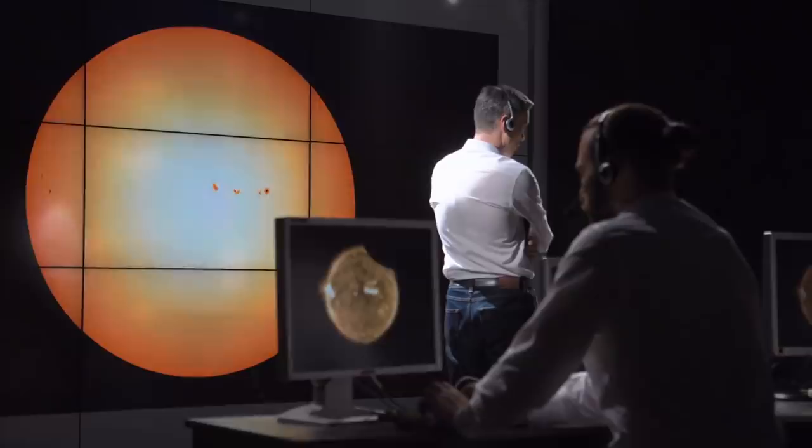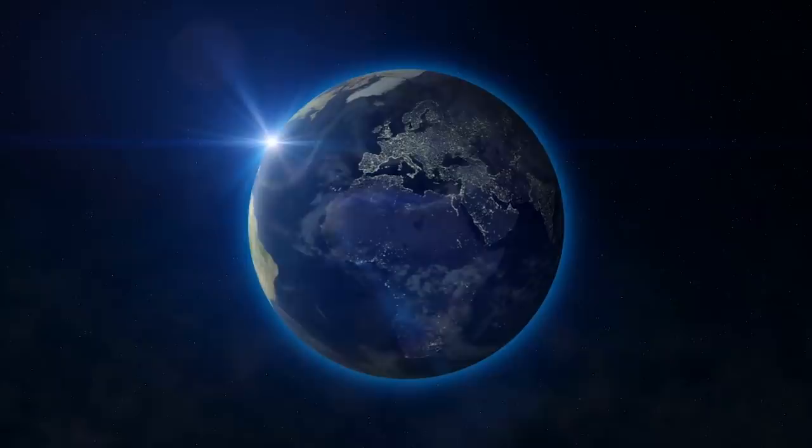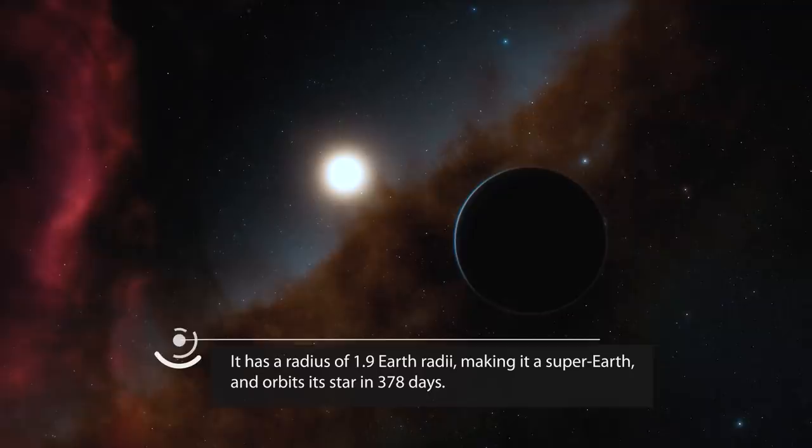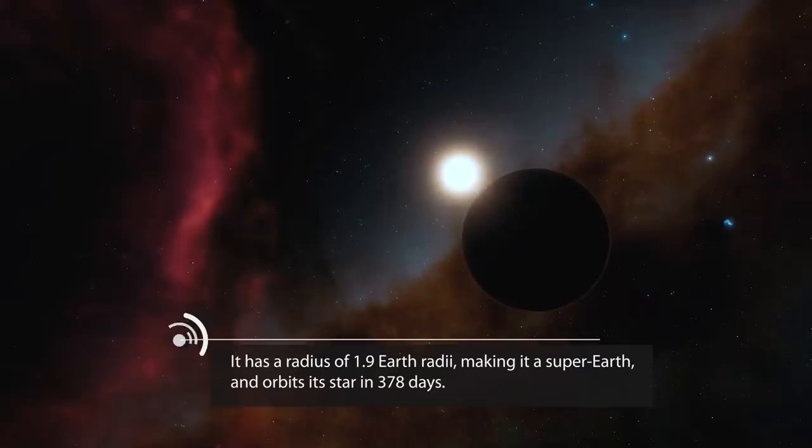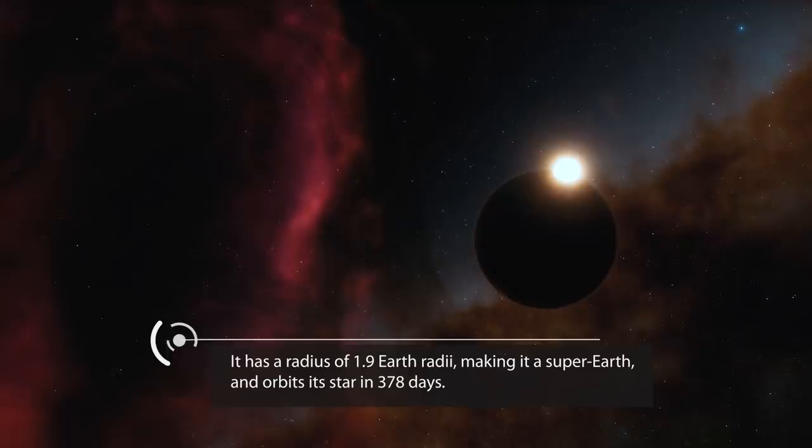So what is this probable new world like? From what we know so far, it transits its star as seen from Earth. It is estimated to have a radius of 1.9 Earth radii, making it a super-Earth, and orbits its star in 378 days, which is only roughly 13 days more than our own world and thus wouldn't be too much of an adjustment to make.